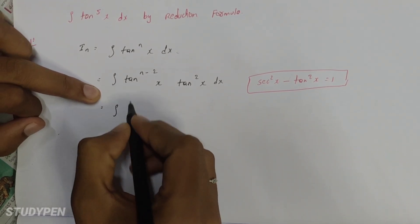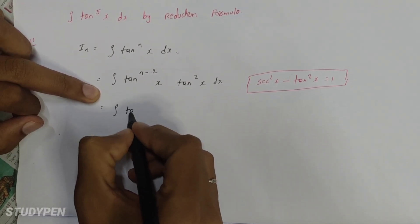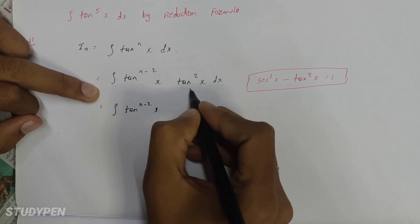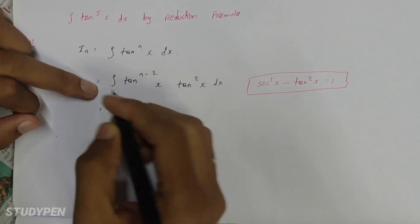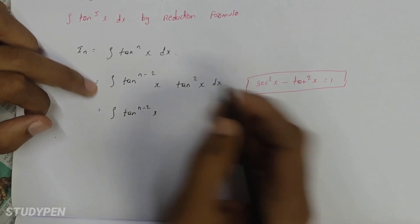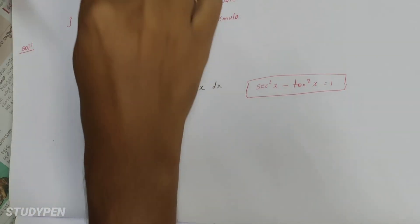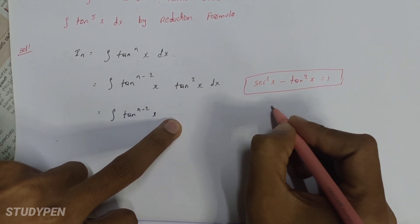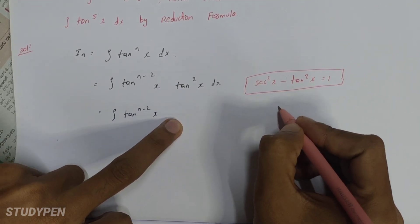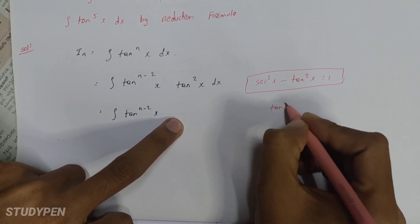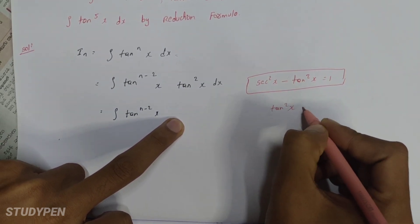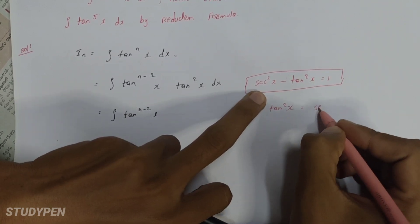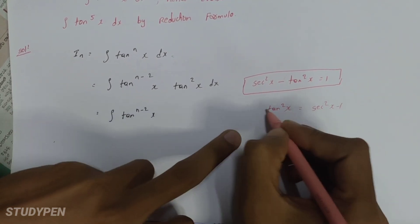The next integral: tan power of n-2x. This is the formula. For example, tan square x — the formula is tan square x is equal to sec square x minus 1.